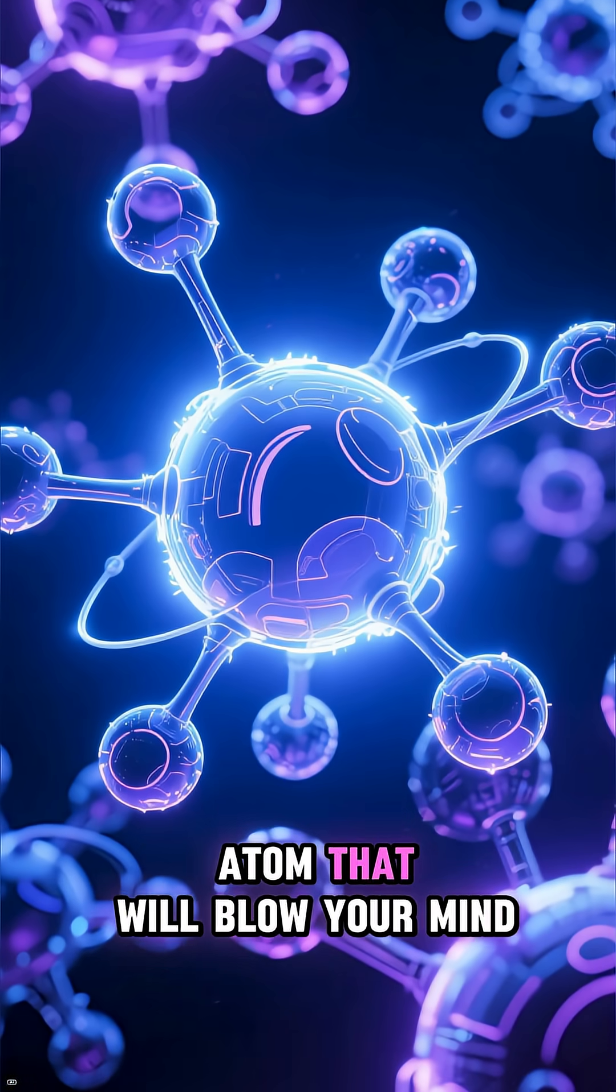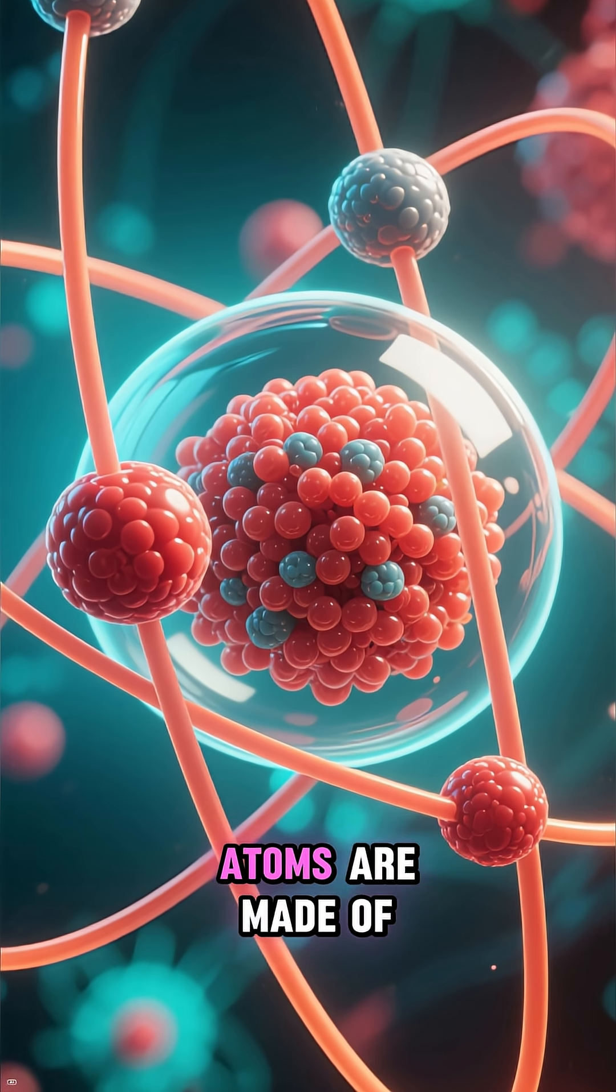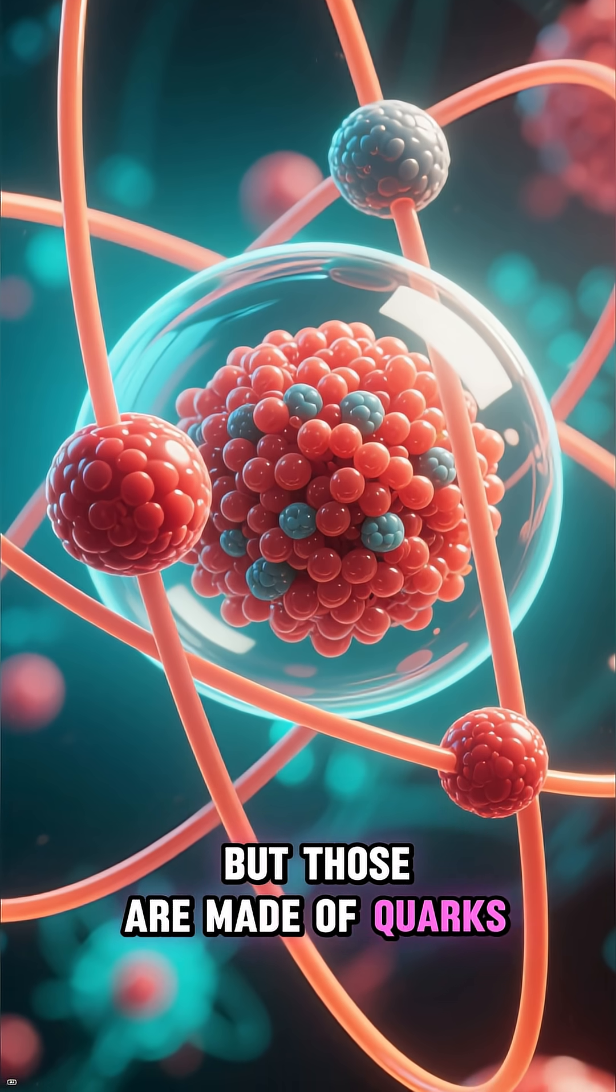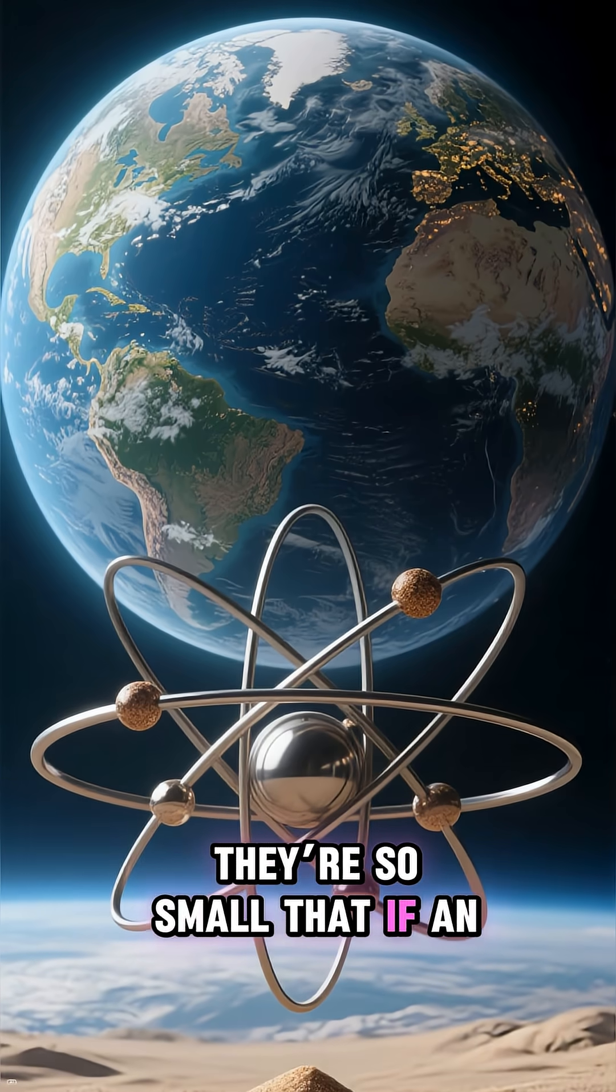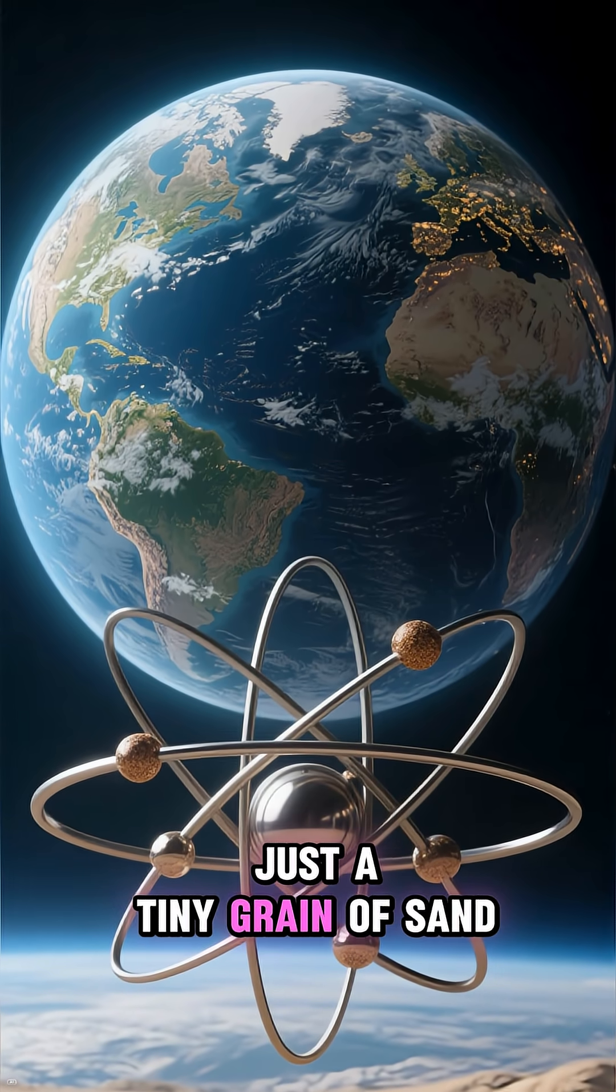5 Things Smaller Than An Atom That Will Blow Your Mind. Number 1: Quarks. Atoms are made of protons and neutrons, but those are made of quarks. They're so small that if an atom were the size of Earth, a quark would be just a tiny grain of sand.